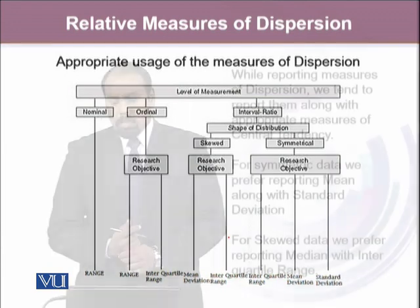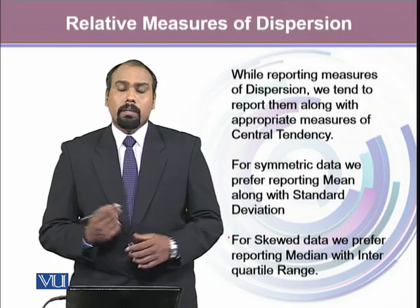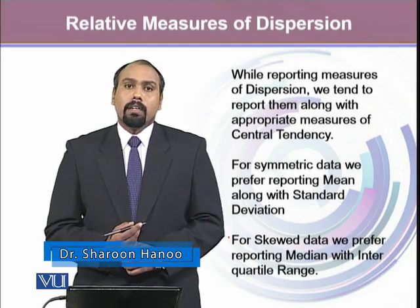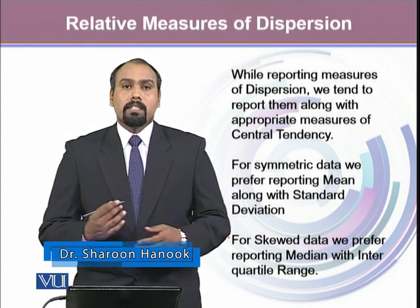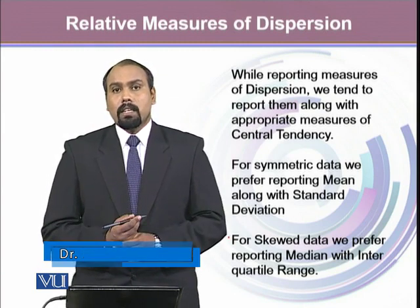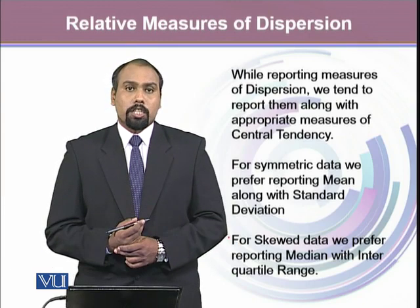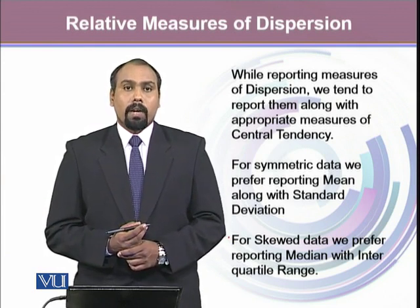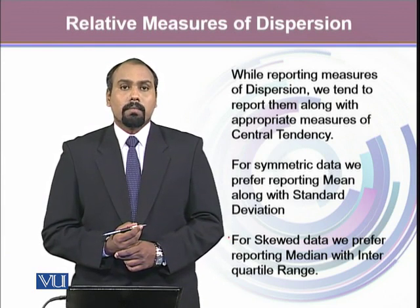When reporting these measures of dispersion, we tend to report them along with the measures of central tendency. If the data is symmetric, we report the arithmetic mean along with the standard deviation. But if our data is skewed — whether positively or negatively skewed — we prefer reporting the interquartile range along with the median.